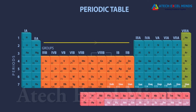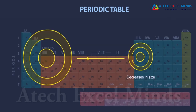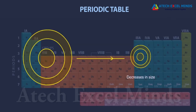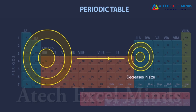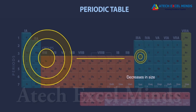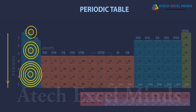The increase in nuclear charge tends to pull electrons closer to the nucleus, which reduces the size of the atom. Atomic size increases down the group because new shells are being added as we go down the group, causing an increase in distance between the outermost electrons and the nucleus.